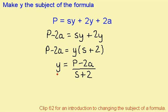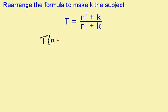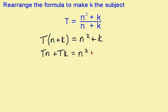y is now the subject of my formula. To make k the subject, the first thing I'm going to do is multiply through by this factor here, n plus k. So I have t multiplied by n plus k gives me n squared plus k. I'm now going to multiply out this bracket: tn plus tk equals n squared plus k.